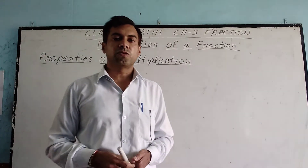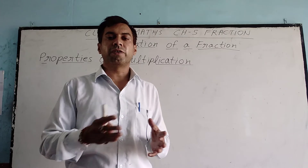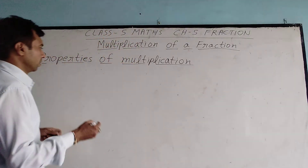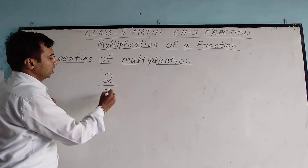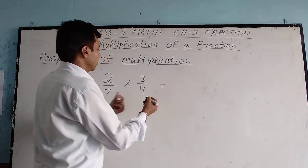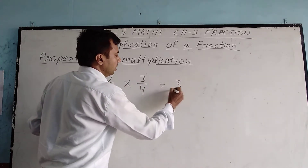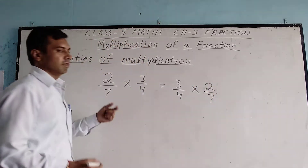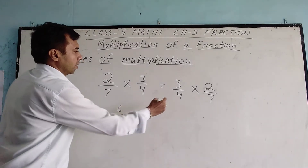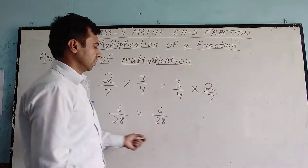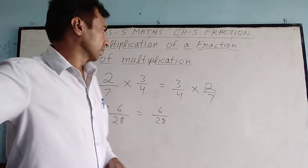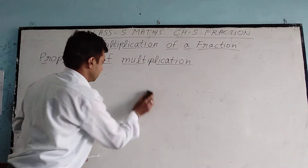Third property: if we change the order of the fractions being multiplied, there is no change in the result. The result remains the same. For example, 2 by 7 multiplied by 3 by 4 gives 6 by 28. If we change the order to 3 by 4 into 2 by 7, the result is still 6 by 28. So changing the order of fractions does not change the result.